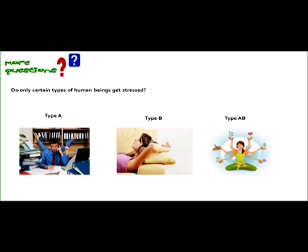Contrary to that, the belief is that the Type B person is generally relaxed, laid back, very patient, and tolerant — and that the Type B person does not get much stress. The Type AB person, they say, is an achiever but without stress. The Type AB person has learned how to balance work and life, family along with office work, and almost does not get any stress at all.